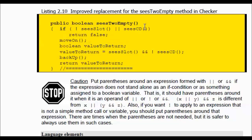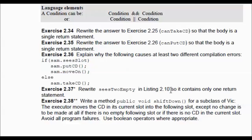You see this at work in listing 2.10, which we're going to change. It says CsEmpty: if there's no slot, or if there's no slot OR if it sees a CD, you return false. This means if the first condition is true, you don't have to run the second condition — that's a fail safe. So we're rewriting this listing to contain only one return statement.